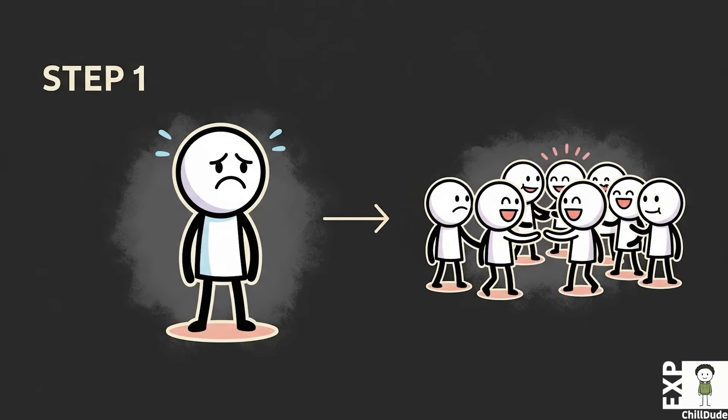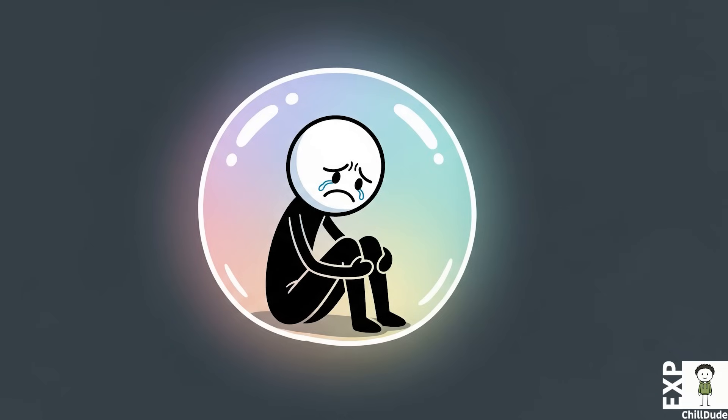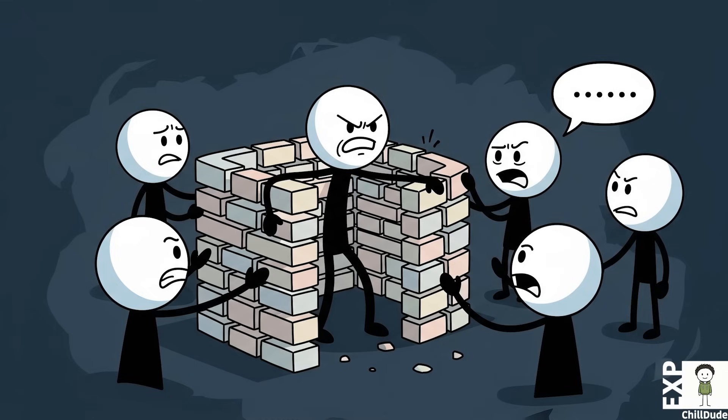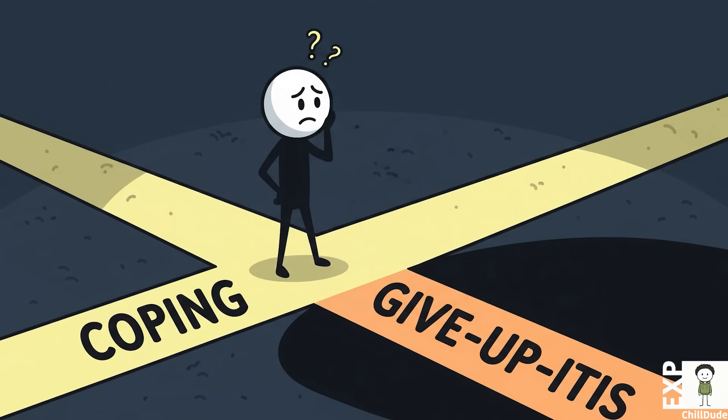The first stage is social withdrawal. Following a traumatic event, the individual begins to pull away from the world. This is not just quietness, it's a profound emotional retreat. They become passive, listless, and seemingly devoid of feeling. They cease to engage in social interaction, isolating themselves as a protective measure against further psychological pain. This is a common coping mechanism, but in cases of give-up-itis, it becomes the first step down a perilous slope.